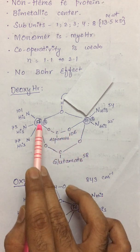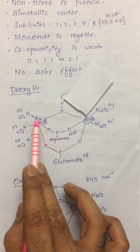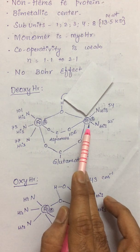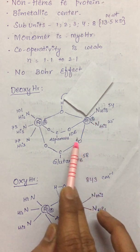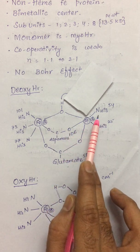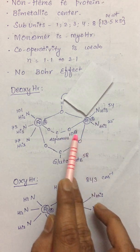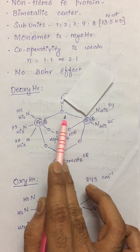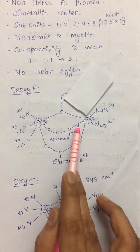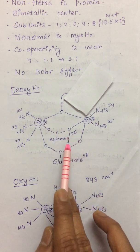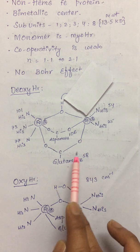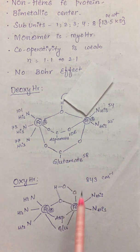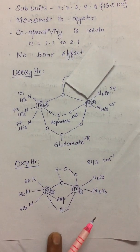The geometry around iron A in deoxyhemerythrin is approximately octahedral. Iron B is surrounded by five ligands (coordination number five), each monodentate: two are histidine nitrogens, one is oxygen from the hydroxo bridge, and the fourth and fifth coordination sites are oxygens from aspartate and glutamate. The geometry around iron B is approximately square pyramidal.